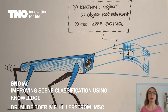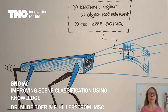Welcome to the presentation about scene classification for the SNOW project. My name is Fiek Ehlersdruim, and in this presentation I will explain the work I did together with Maike de Boer about scene classifications based on object detections. I will explain how we add knowledge to our system and how it improved our predictions about which scene the robot will be in.